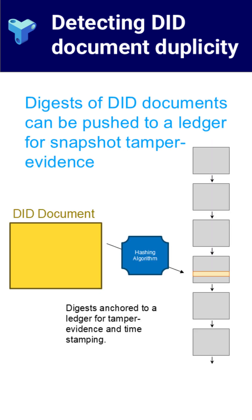A different approach used by some DID methods is to post a digest of the DID document content to a public ledger, such as Ethereum. Instead of storing the entire DID document, only a cryptographic fingerprint of the content is recorded. This digest acts as a tamper-evident seal. If someone tries to change the content of the DID document, the digest will no longer match. Verifiers can use this to ensure that the DID document they're viewing is exactly the one that was originally anchored to the blockchain.